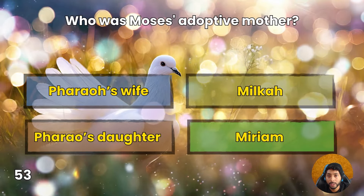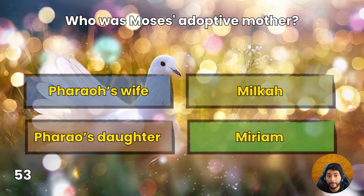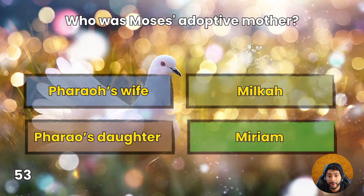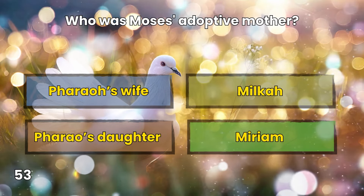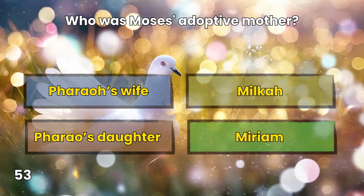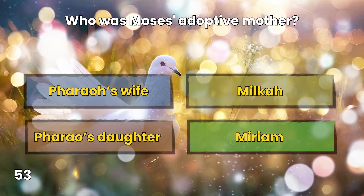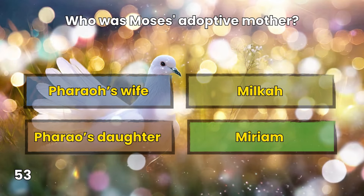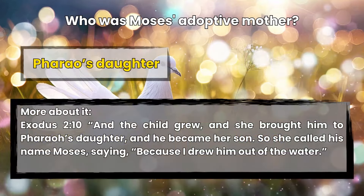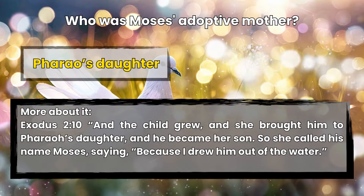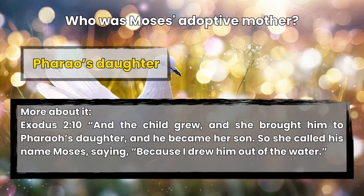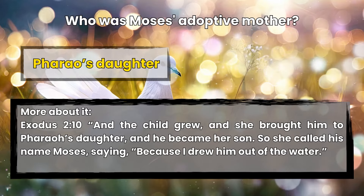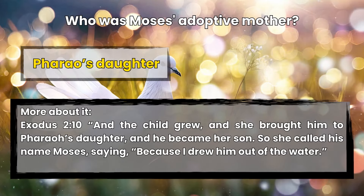Question 53: Who was Moses' adoptive mother? Pharaoh's wife, Milcah, Pharaoh's daughter, or Miriam? Pharaoh's daughter. Exodus 2:10 — And the child grew, and she brought him to Pharaoh's daughter, and he became her son. So she called his name Moses, saying, 'Because I drew him out of the water.'